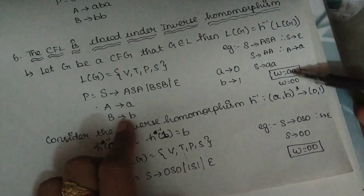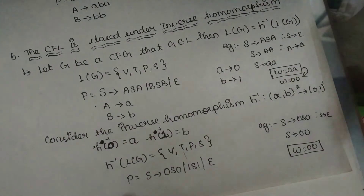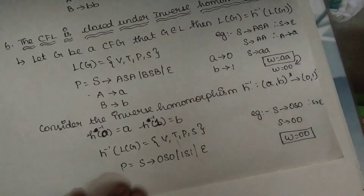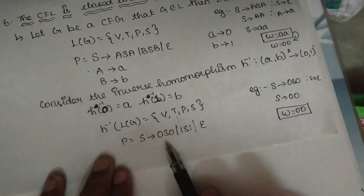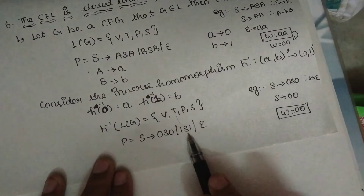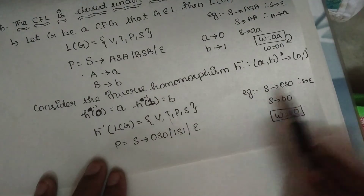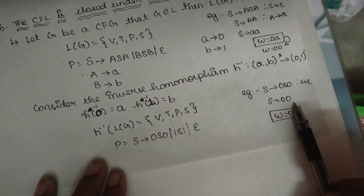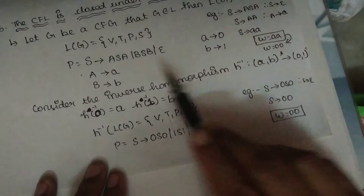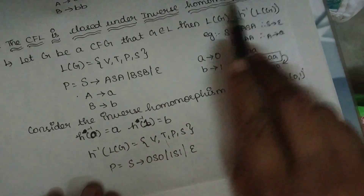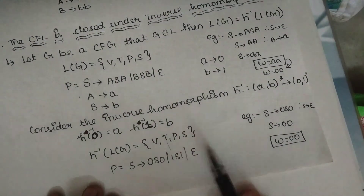Apply the operations — now this is 0, yes, 0. I am going to add yes. If I add epsilon 0, I will add 0, 0. I am going to add 0, 0. If you are going to add 0, 0, 0. So the inverse homomorphism of a context-free language is also a context-free language.